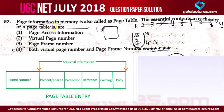Question number 57 is saying page information in memory is also called as page table. We know what a page table is — we have seen this in memory management techniques. The essential content in each entry of a page table is what? This is asking about the entry of the page table, remember.